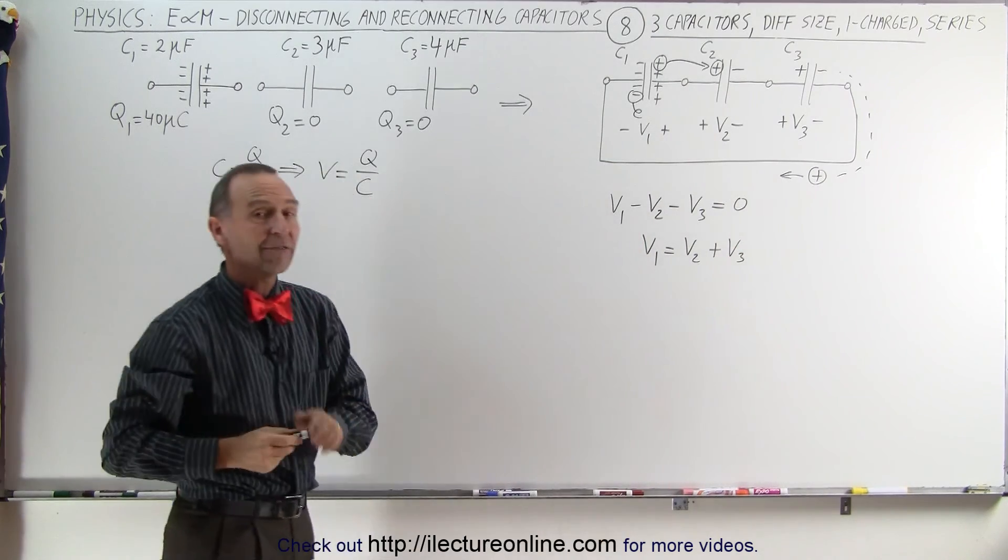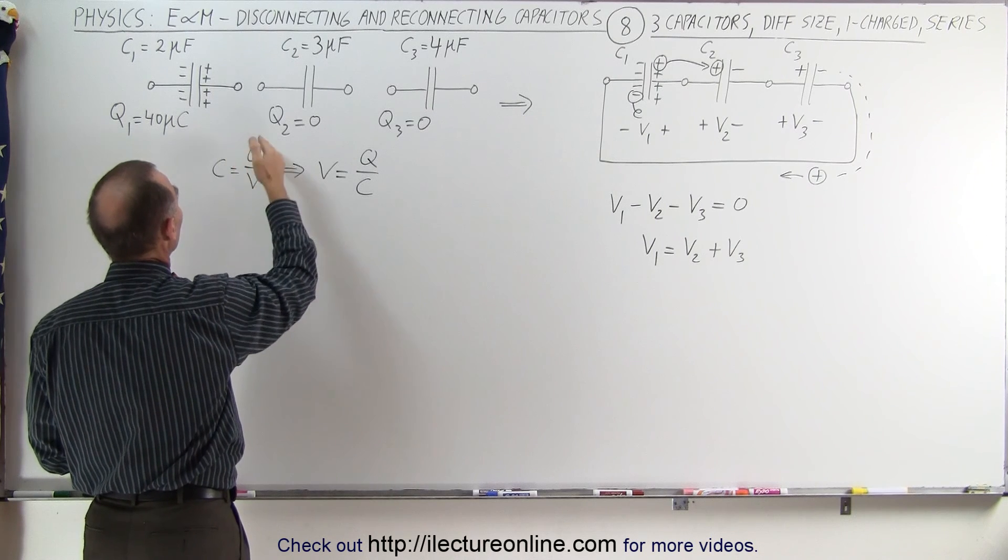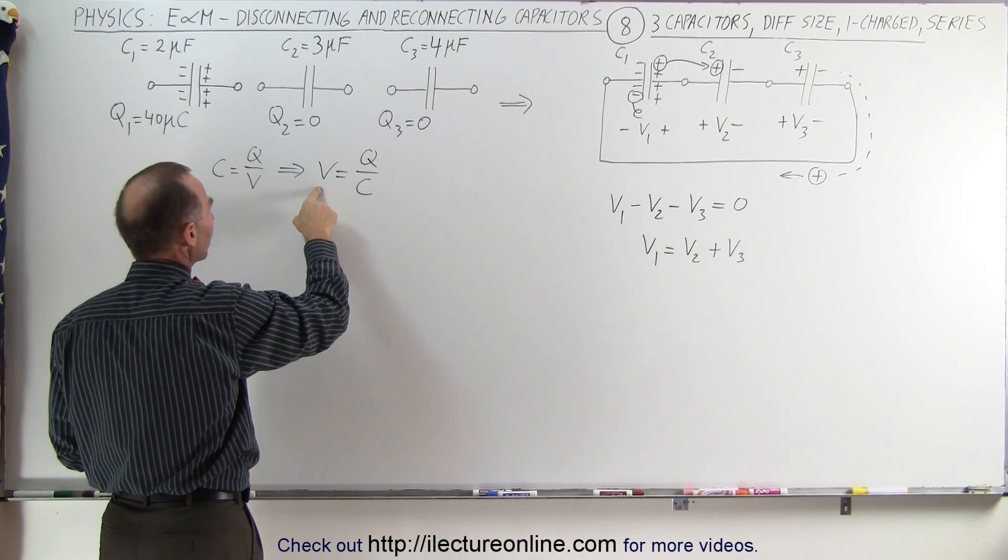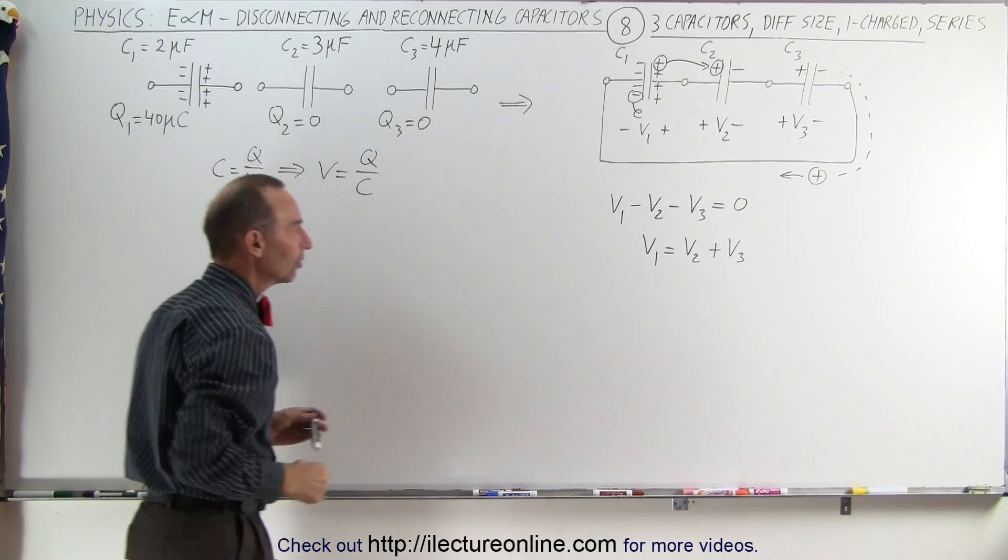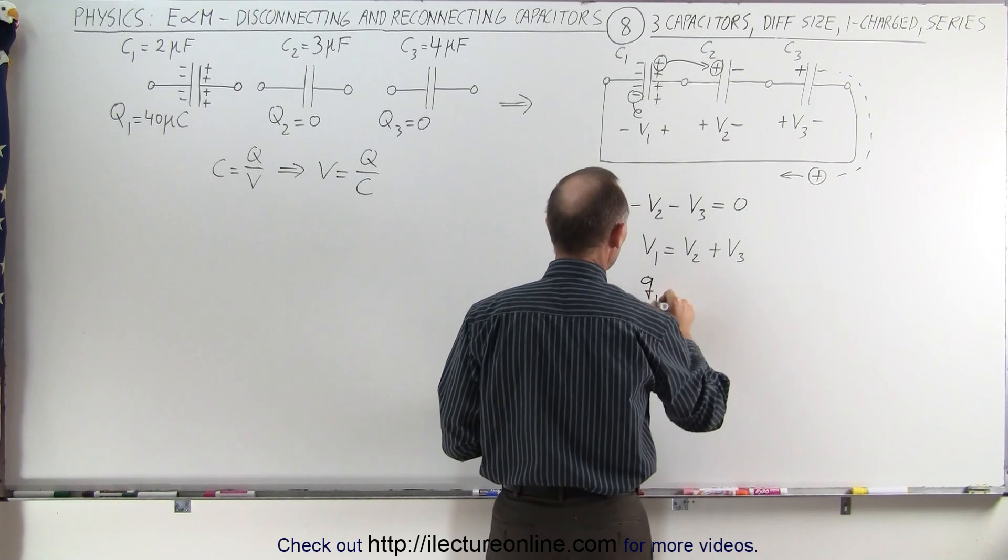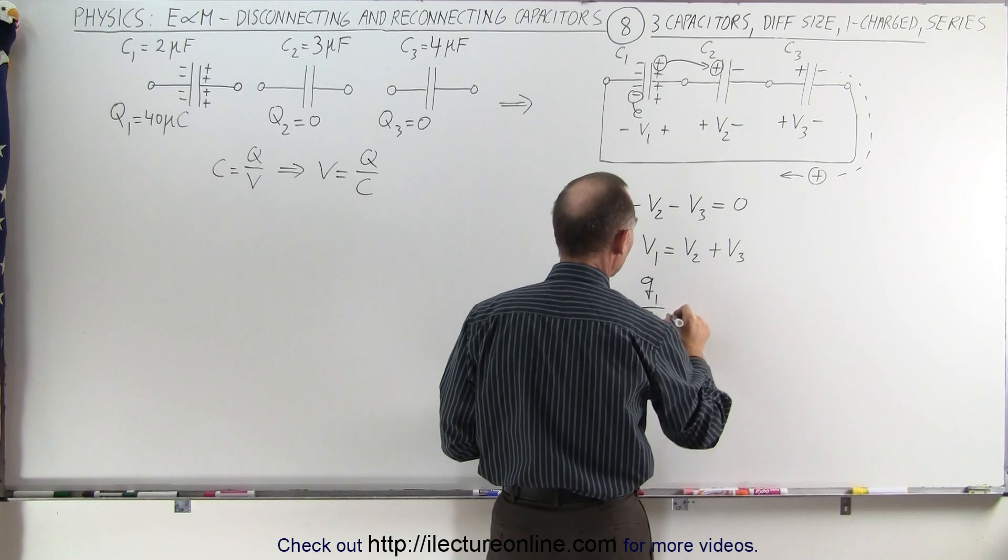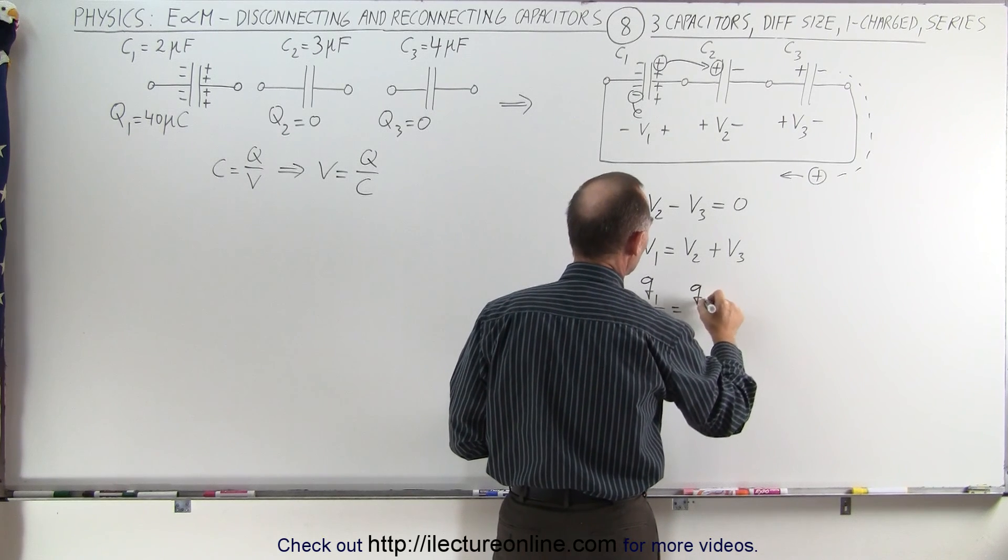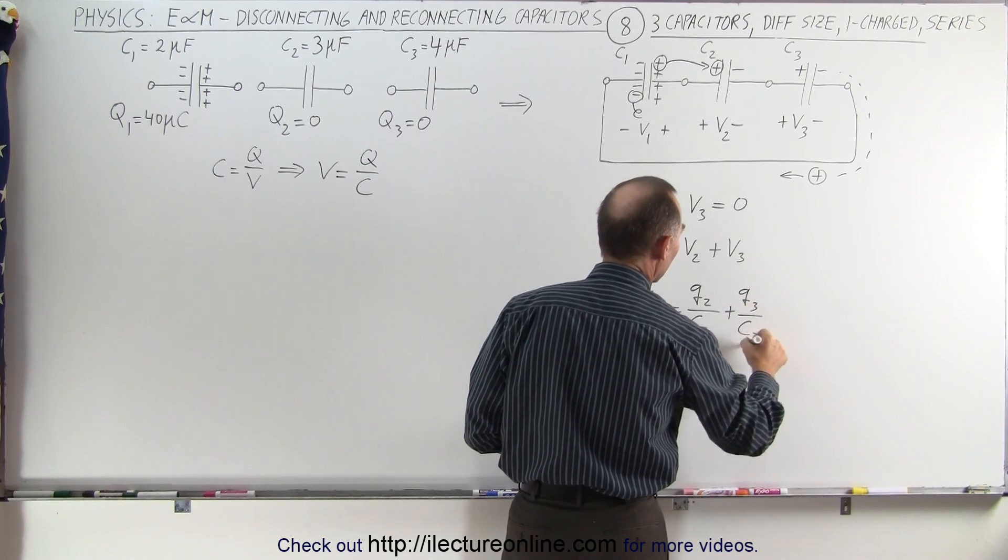And then using the definition of capacitance, where the capacitance is equal to the ratio of the charge divided by the voltage, which therefore can be solved for the voltage being the ratio of the charge over the capacitance. We can write that V1, it'll be Q1, the final charge on C1 divided by C1.